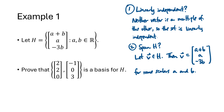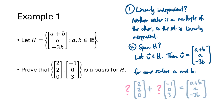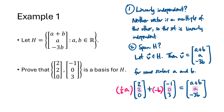We know that V looks like (a + b, a, -3b) for some scalars a and b. Our goal is to figure out how we can write V as a linear combination of (2, 2, 0) and (-1, 0, 3). The zeros in these vectors help us. Looking at the third entries: whatever scalar is in front of the first vector gets multiplied by 0, and the second scalar gets multiplied by 3, giving -3b. So we need negative b as the second scalar. Looking at the second entries: the first scalar gets multiplied by 2 to give a, so the first scalar must be 1/2 a. We verify: (1/2)a times 2 plus (-b) times (-1) does equal a + b, confirming the first entries match.